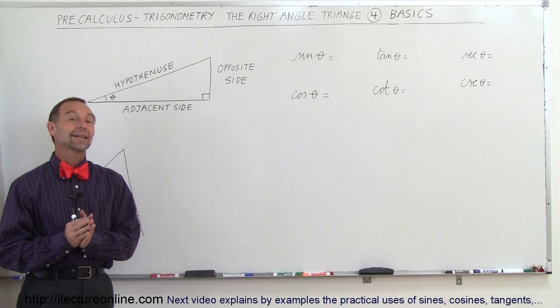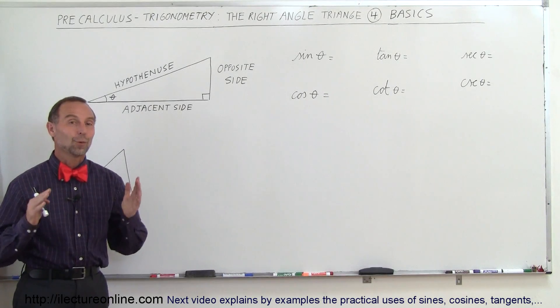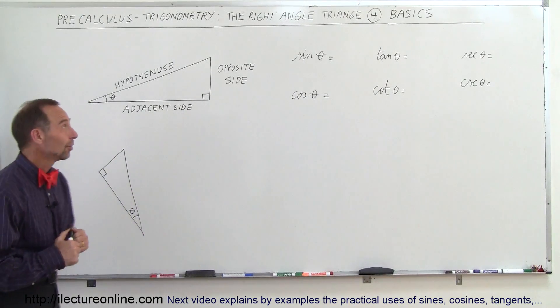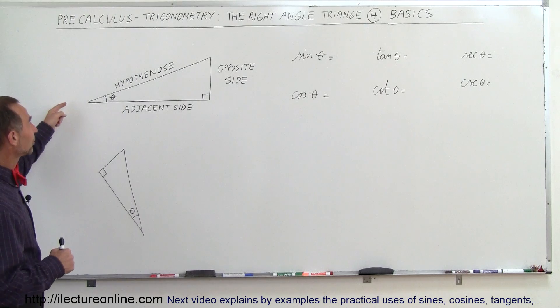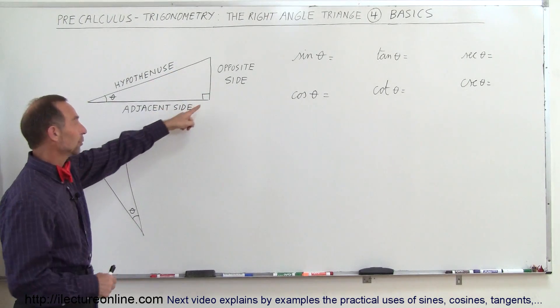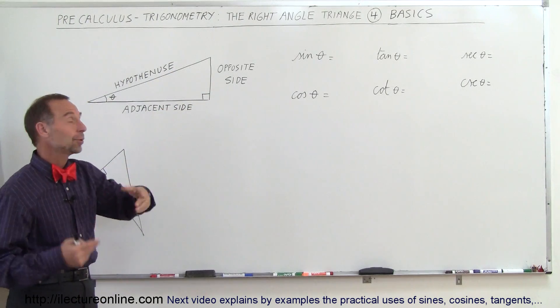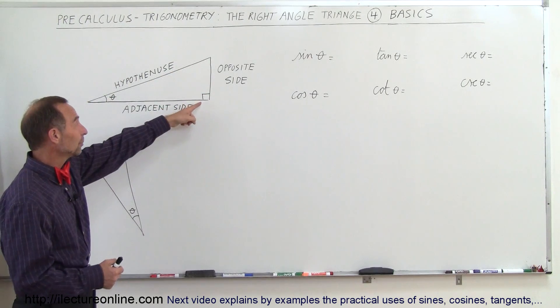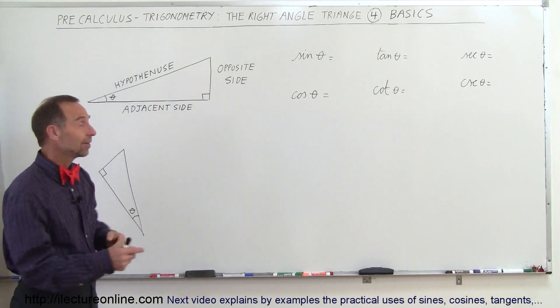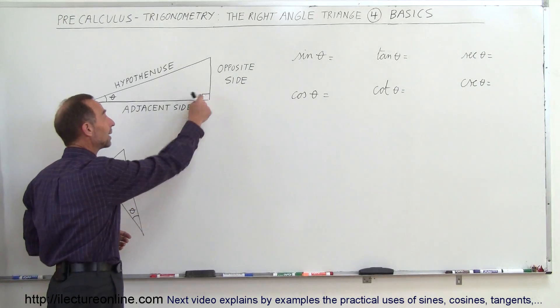Welcome to ElectronLine and now for some right angle triangle basics. Here we have our typical right angle triangle. The reason why we know this is a right angle is because we have the little symbol there that indicates that's a 90 degree angle.